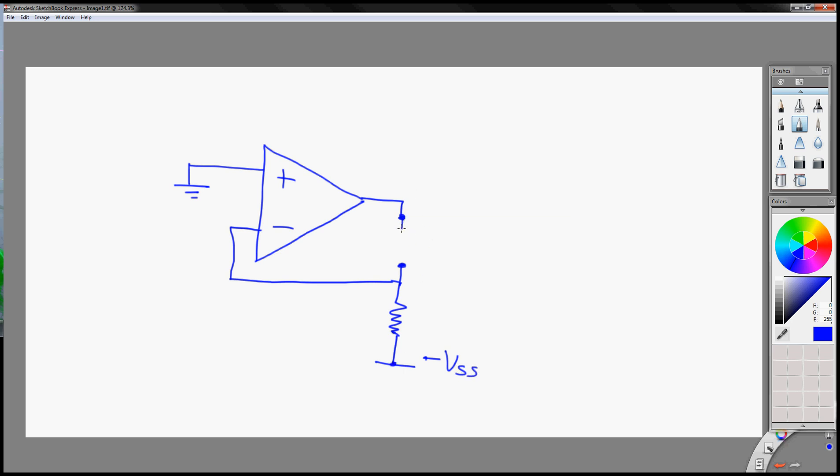And this is where your R load is. Let's call this RS. And you can vary this resistor to change the current.